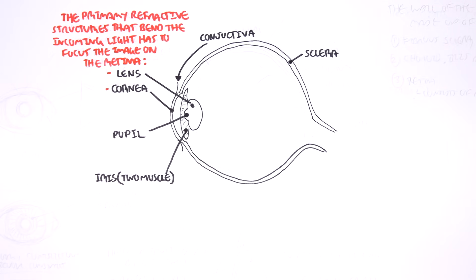These are the main structures basically responsible for bending the incoming light to focus on the retina at the back.